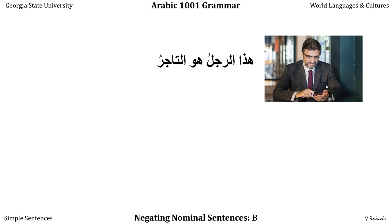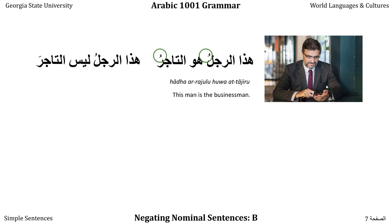Looking at a man: 'Hatha al-Rajulu huwa at-Tajiru' — this man is the businessman. Both halves are in the Marfu case by default; Ar-Rajul gets a single Dhammah because it's definite, same for At-Tajir. However, saying 'Hatha al-Rajulu Leysa at-Tajira' — this man is just posing as a businessman — I keep Ar-Rajul in the Marfu case, but because At-Tajir follows Leysa it goes into the Mansoub case and takes a single Fathah instead of a single Dhammah.